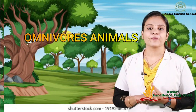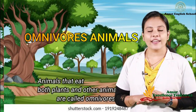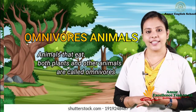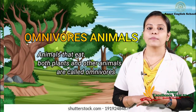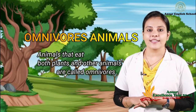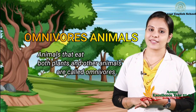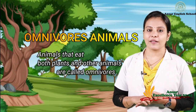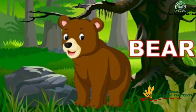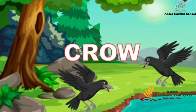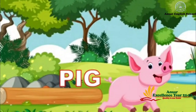Third one, omnivores. The animals that eat both plants and other animals are called omnivores. Examples: bear, crow, pig.